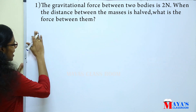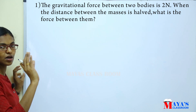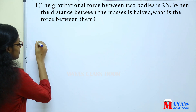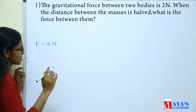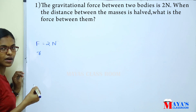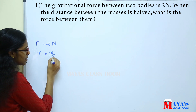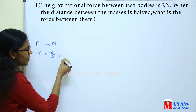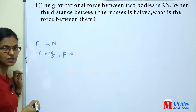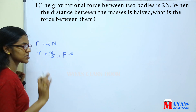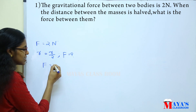The distance between the masses is half, which is r by 2. If the distance is r by 2, then we substitute this into the formula.